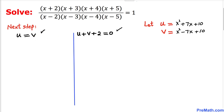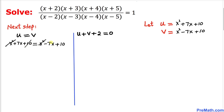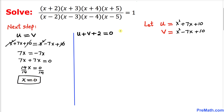For the first equation u = v: substituting back, x²+7x+10 = x²-7x+10. The x² and +10 terms cancel, leaving 7x = -7x. Moving -7x to the other side and dividing both sides by 14 gives x = 0.